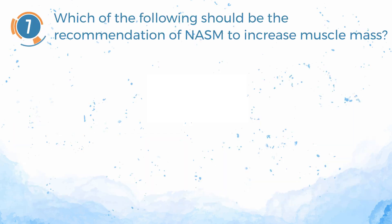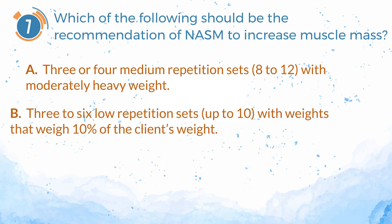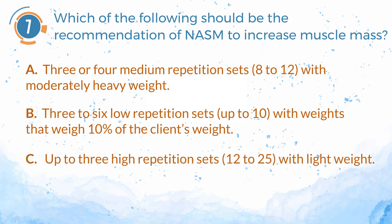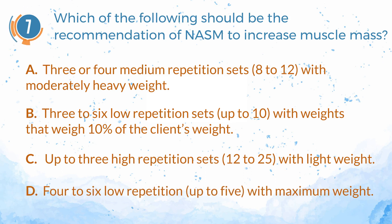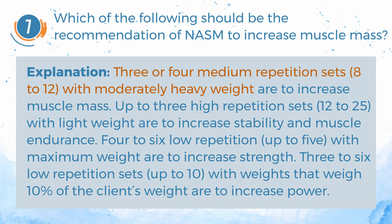Number 7. Which of the following should be the recommendation of NASM to increase muscle mass? A. 3 or 4 medium repetition sets, 8 to 12, with moderately heavy weight. B. 3 to 6 low repetition sets, up to 10, with weights that weigh 10% of the client's weight. C. Up to 3 high repetition sets, 12 to 25, with light weight. D. 4 to 6 low repetition, up to 5, with maximum weight. The answer is A: 3 or 4 medium repetition sets, 8 to 12, with moderately heavy weight. Explanation: Up to 3 high repetition sets, 12 to 25 with light weight are to increase stability and muscle endurance. 4 to 6 low repetition, up to 5, with maximum weight are to increase strength. 3 to 6 low repetition sets, up to 10, with weights that weigh 10% of the client's weight are to increase power.